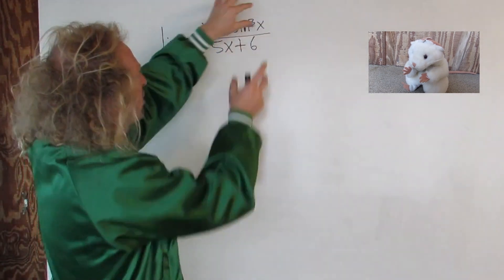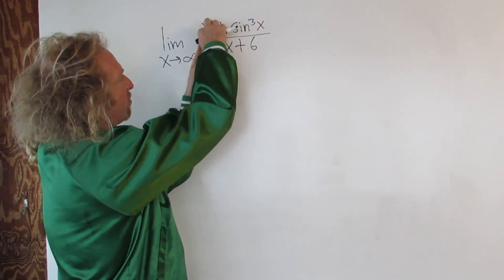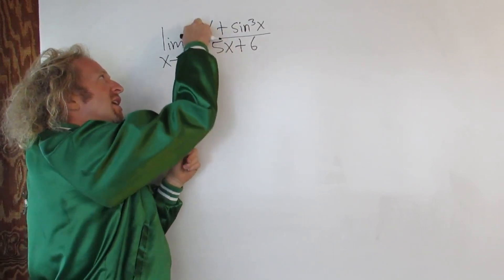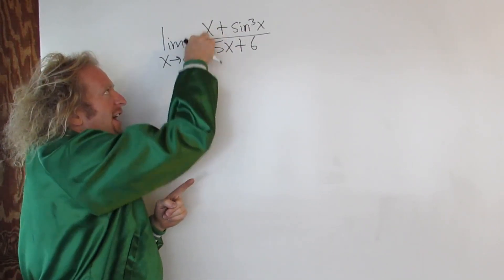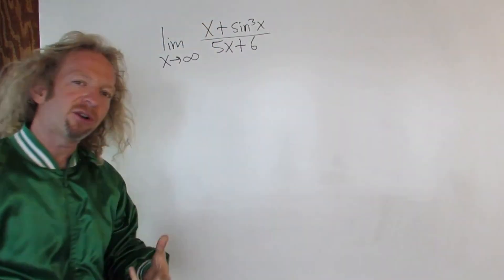So you can think of this as being trapped. And then this is approaching infinity and this is approaching infinity. So you should think that they're approaching at the same rate almost. So you should get like 1 over 5, right? The ratio of the leading coefficients.